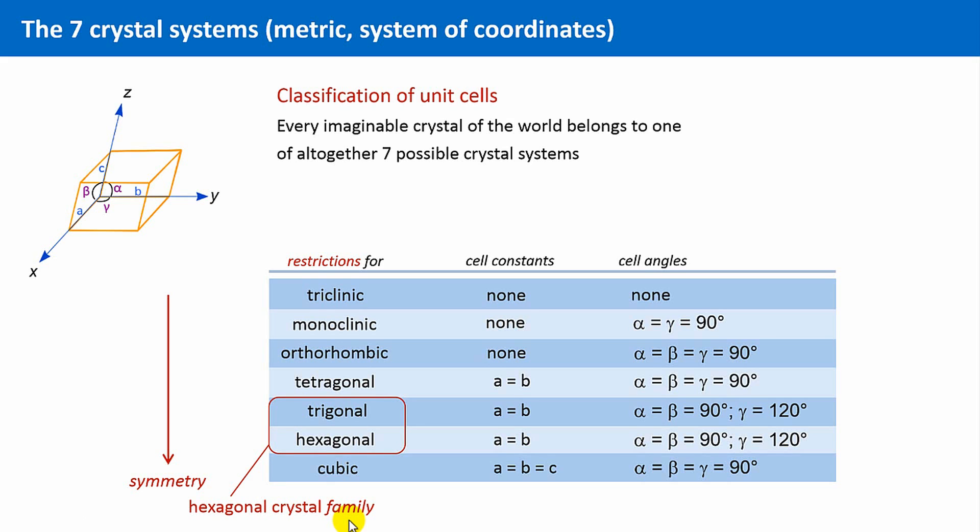However, the classification according to crystal systems is based upon the symmetry. Here, in the additional column, the maximum symmetry of the crystal systems is displayed. And as you see, they differ for the trigonal and hexagonal system.